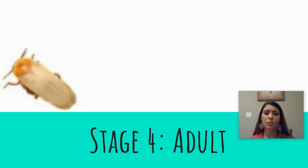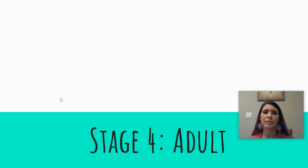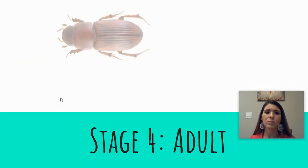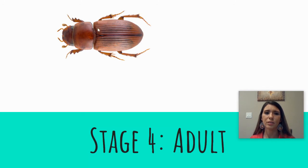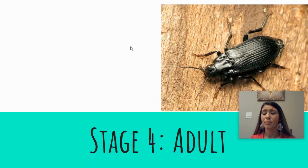Stage four, which is the final stage, is the adult. When it emerges from the pupa it comes out looking very light. Then as it grows older it turns into a much darker color, and at the end of its life cycle it's almost black.